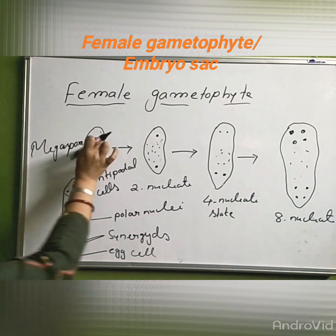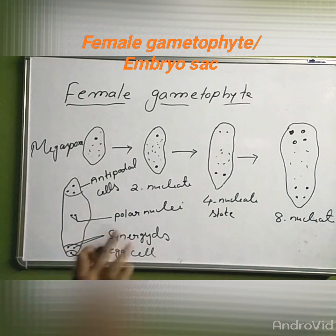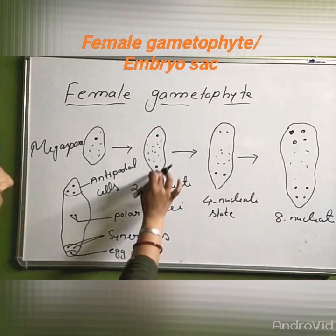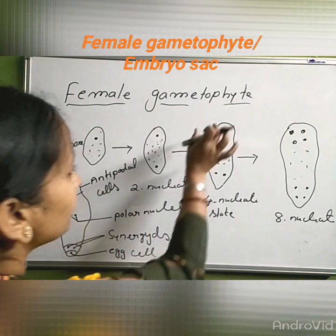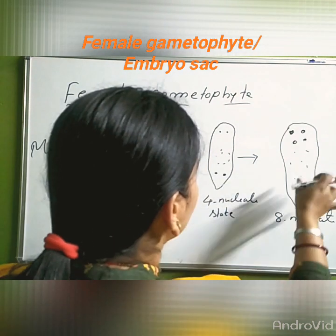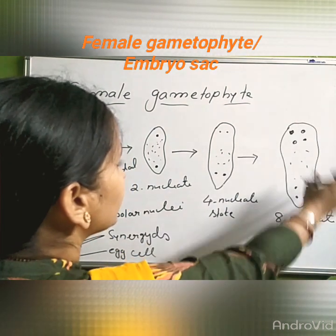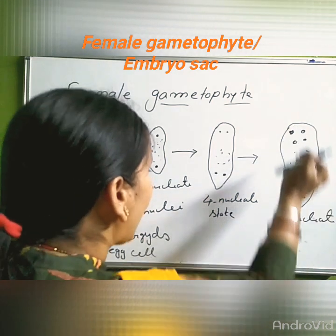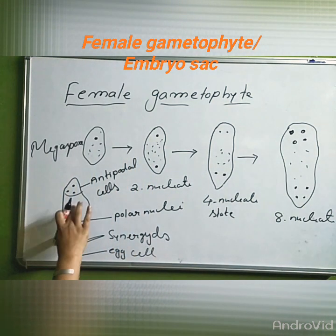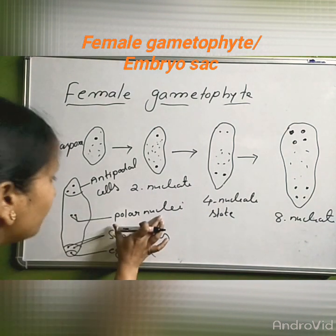This nucleus undergoes three free nuclear divisions. This is the nucleus, this is the two-nucleate state, this is the four-nucleate state, and then the eight-nucleate state. One nucleus from each end comes to the central point — that forms the central cell — and those are the polar nuclei.